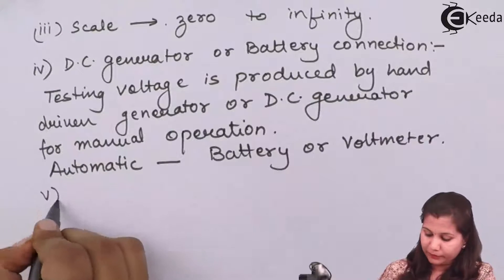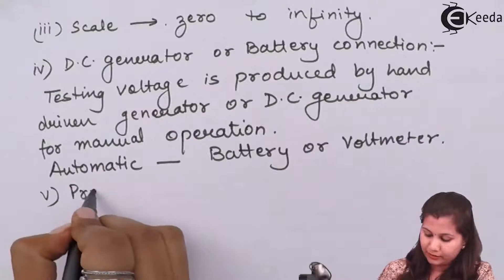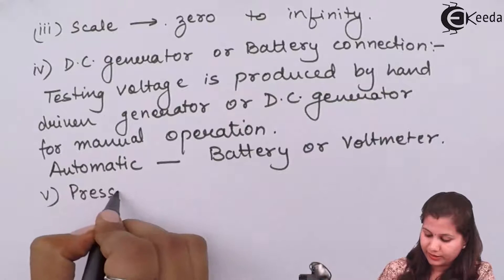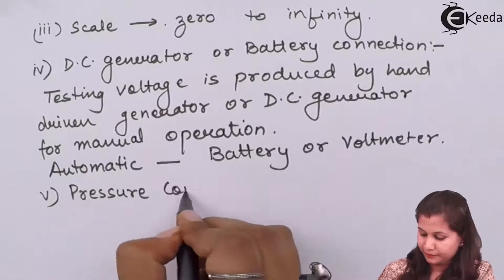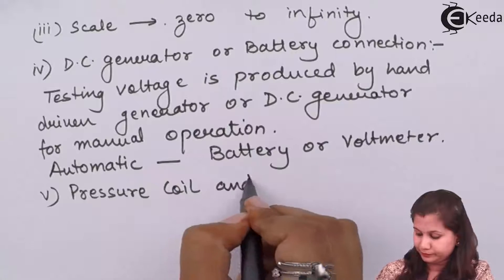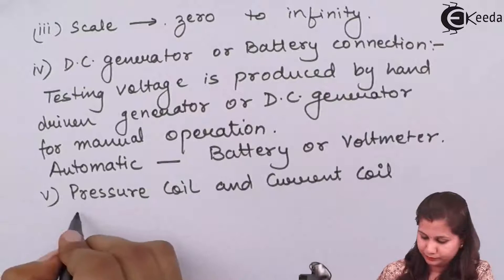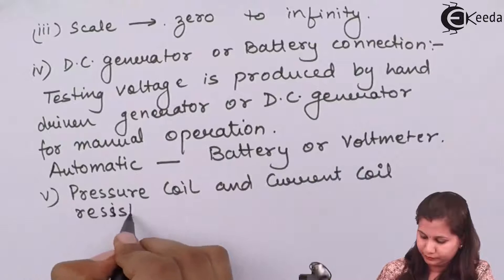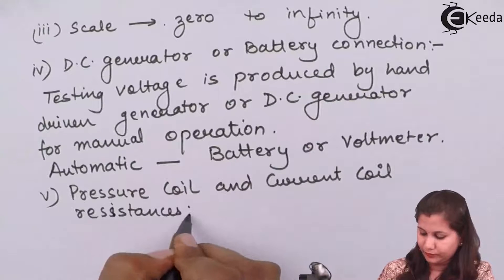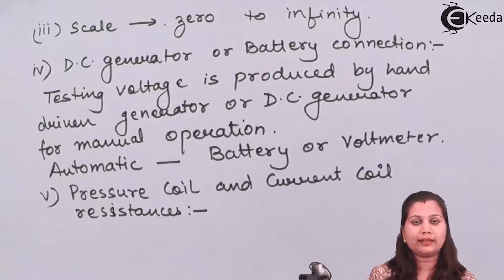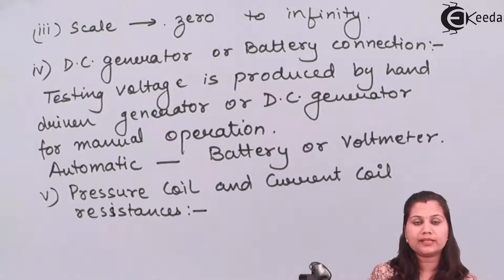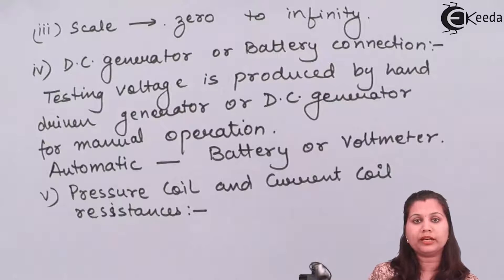The next components are the pressure and current coil resistances. With the potential coil and the current coil some resistances are connected so as to protect the instrument from any type of damage.